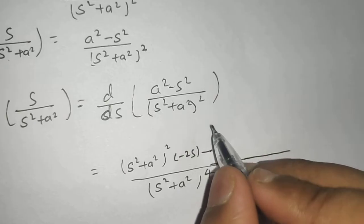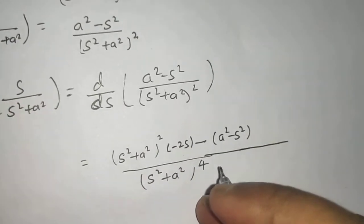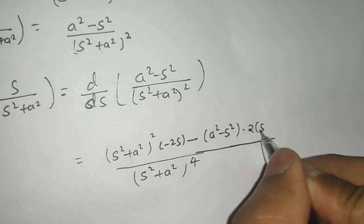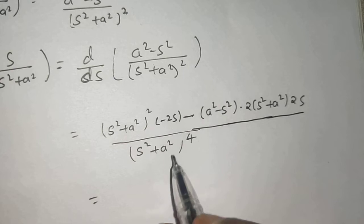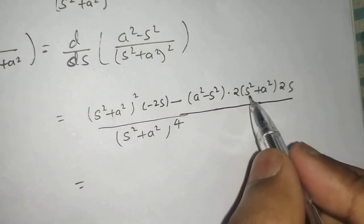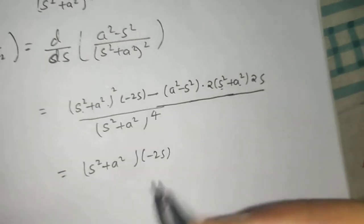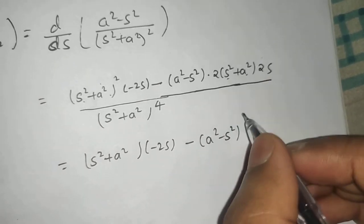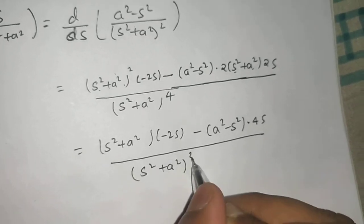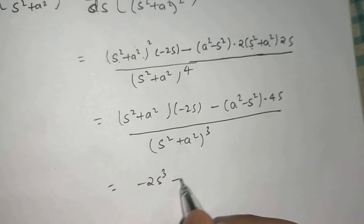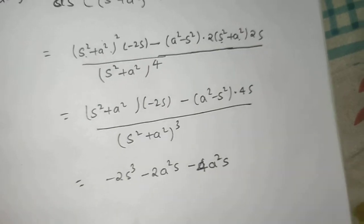Leave the numerator (a²−s²) as is, then differentiate the denominator (s²+a²)²: this gives 2(s²+a²)·2s. We can cancel one factor of (s²+a²), leaving (s²+a²)(−2s) minus (a²−s²)·4s, all divided by (s²+a²)³. Expanding: −2s³ − 2a²s − 4a²s + 4s³ divided by (s²+a²)³.